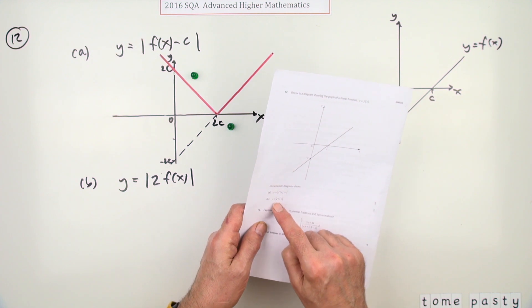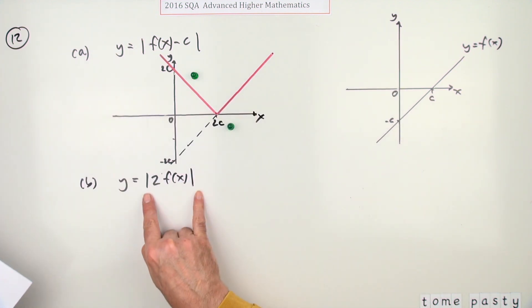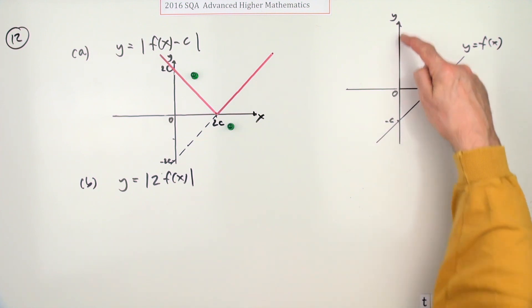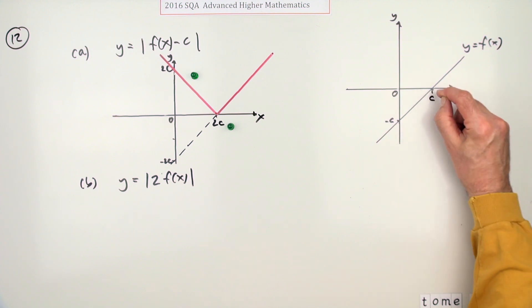Now part b, what about the graph of the modulus of 2 times f of x? 2 times f of x simply means all the answers are twice as big as they were to begin with. So the one that doesn't change is c, so it'll still cut through c.